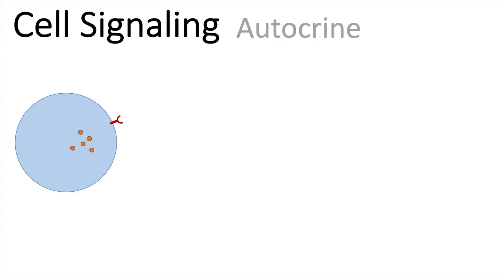Another signaling type here is the autocrine signaling. So in this case here, the cell can secrete a messenger, which can be a hormone for example, and this one can bind to its own receptors on the surface. In that case, the cell has expressed the fitting receptor for its own secreted signaling molecule.